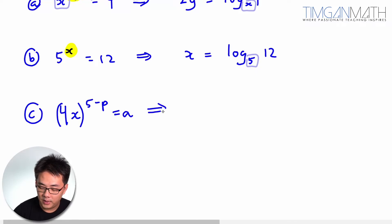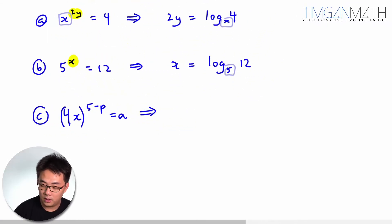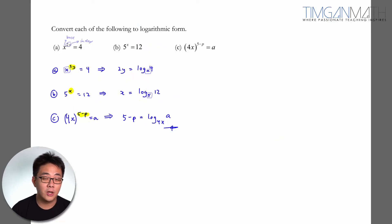Similarly, make the index the subject. So this will be 5 minus p equals to log base 4x equals to a. That's how you express this in logarithmic form.